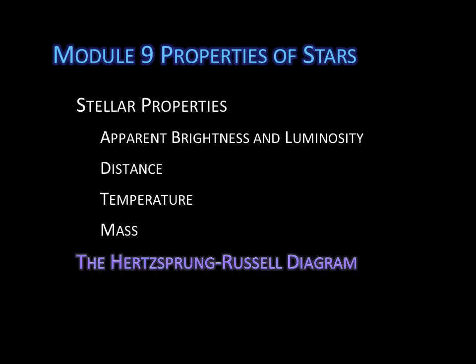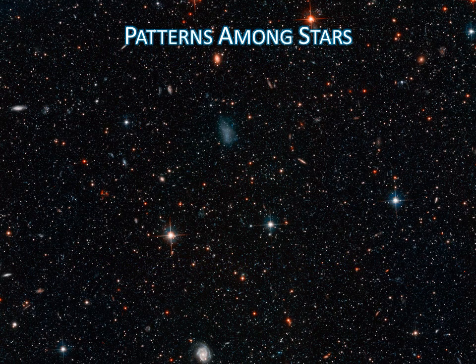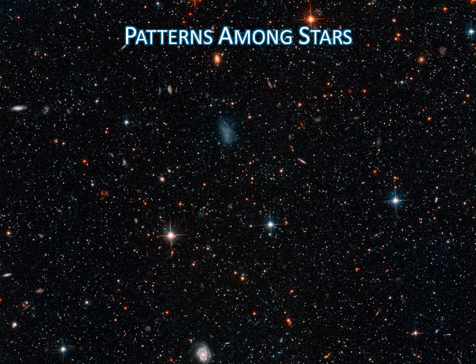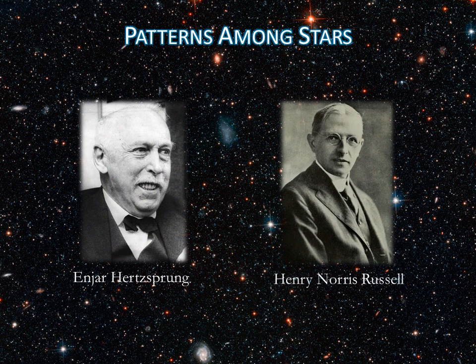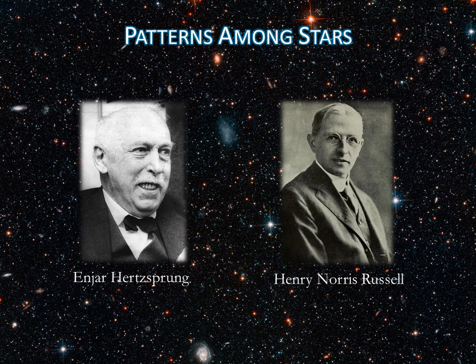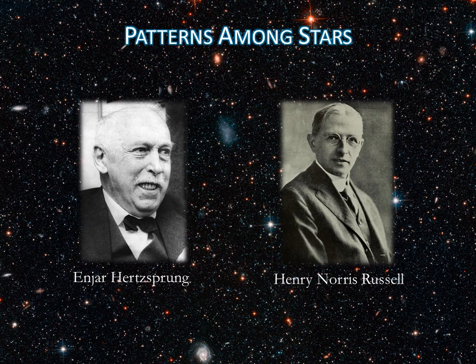In this lecture, we'll learn what a Hertzsprung-Russell diagram is and how we categorize stars. In the early 1900s, a Danish astronomer named Hertzsprung and an American astronomer named Russell independently decided to make graphs of stellar properties. These graphs revealed previously unsuspected patterns among the properties of stars and ultimately unlocked the secrets of stellar life cycles.